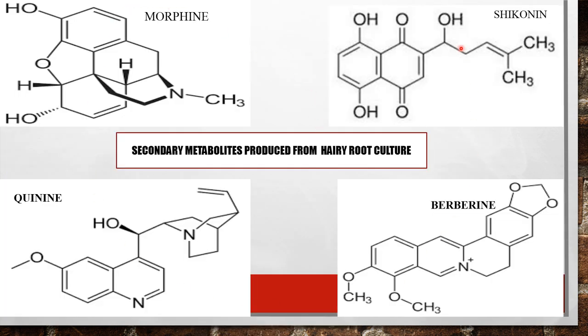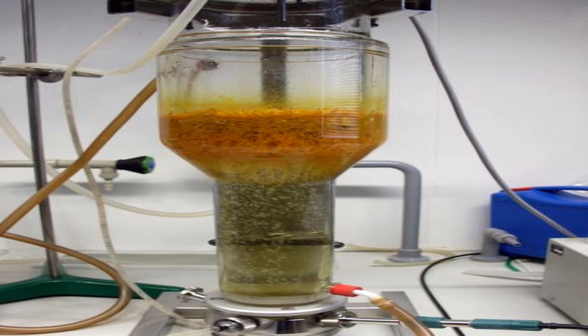Metabolites produced through hairy root culture include morphine used for medical purposes, shikonin used as an antibacterial and anti-ulcer agent, quinine used for curing malaria, and berberine, an alkaloid with medicinal use for cholera and bacterial dysentery. Applications of hairy root culture include regeneration of whole plants, production of secondary metabolites, expression of foreign proteins, and functional analysis of genes.